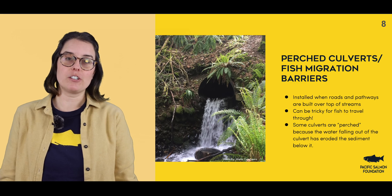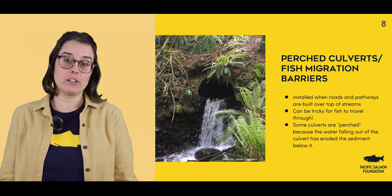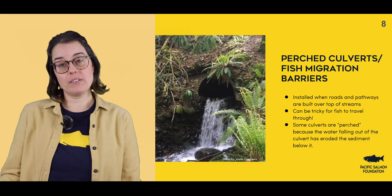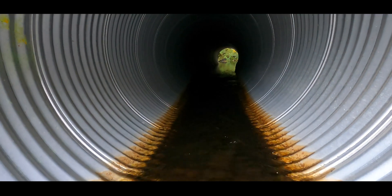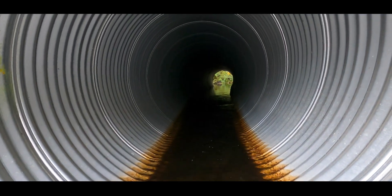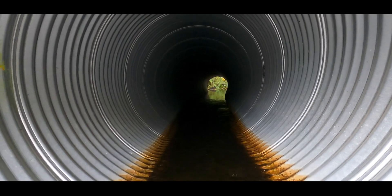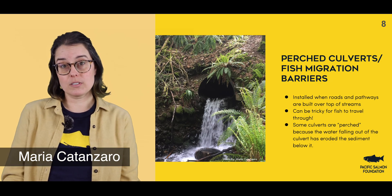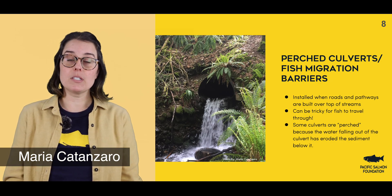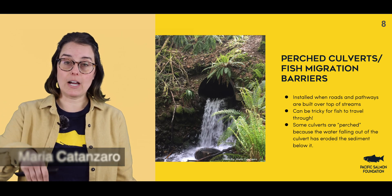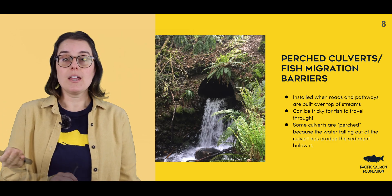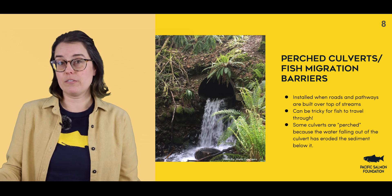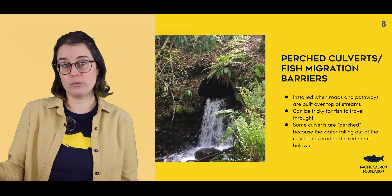One barrier to fish migration are perched culverts. When there's a stream and there has to be a roadway above it, they channelize the stream below ground and use culverts so that the water can move through. However, under high flows, sometimes the water can scour below the culvert, lowering the elevation and making it more difficult for fish to actually travel through.